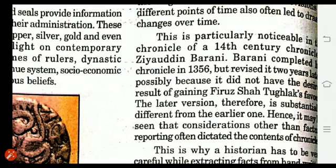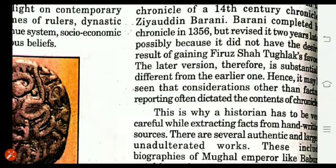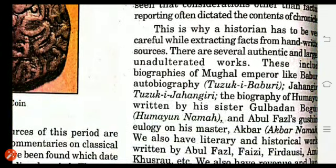Hence, it may seem that considerations other than factual reporting often dictated the content of the chronicle. The information we get through chronicles is not always totally correct — some considerations, such as favouritism, are present. A historian must therefore be very careful while extracting facts from handwritten sources, since some chronicles are not fully factual.